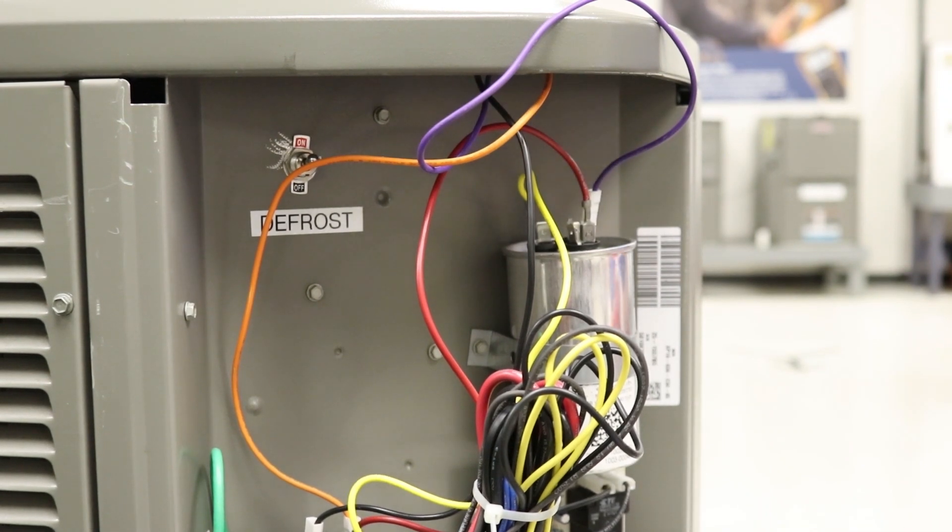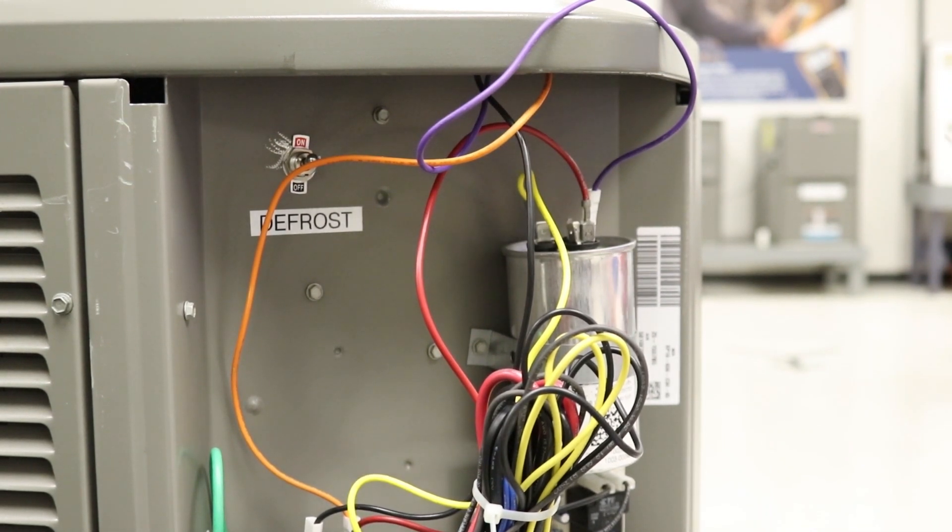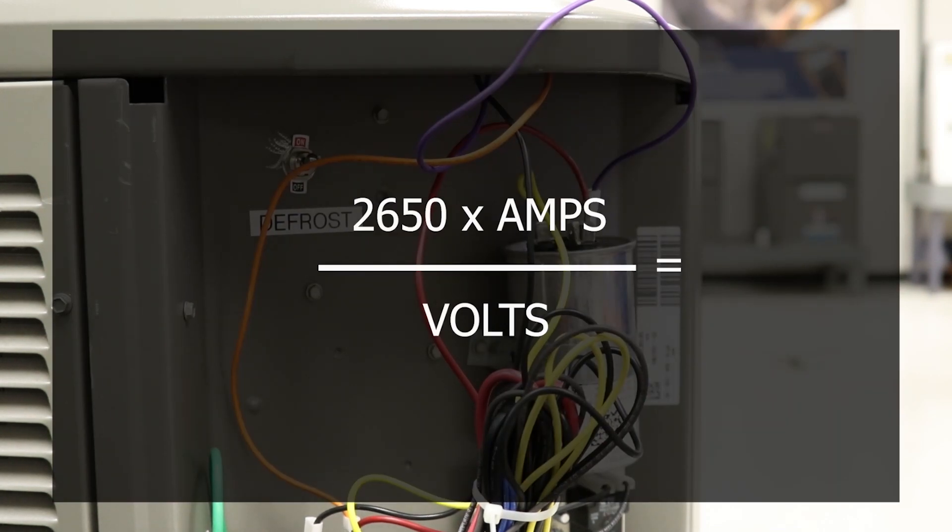So from there, we are going to take those numbers and plug them into the formula, which that formula is 2650 times the amperage divided by the voltage.